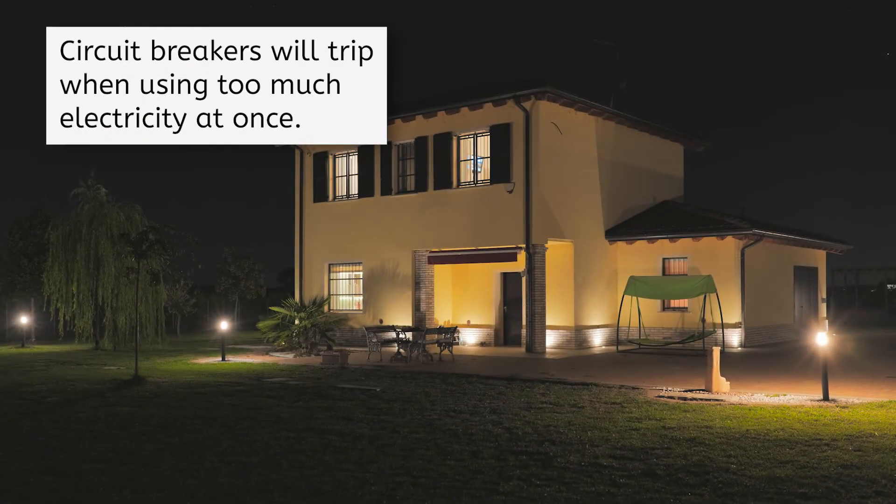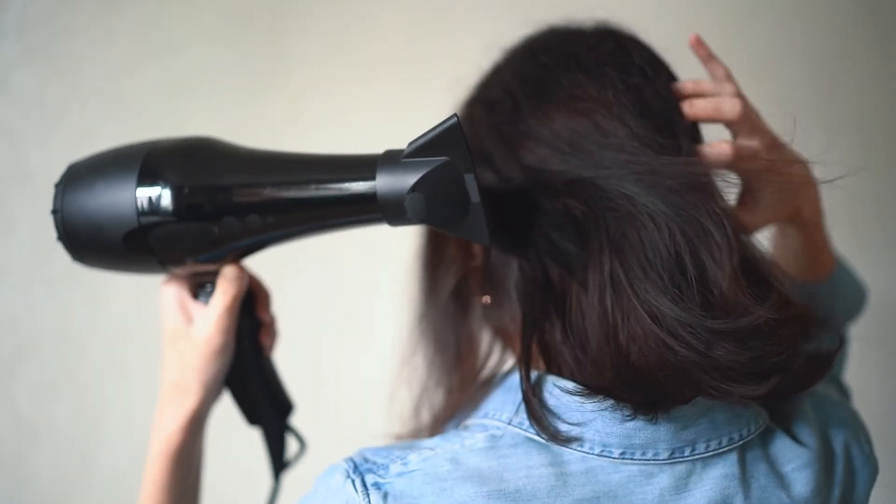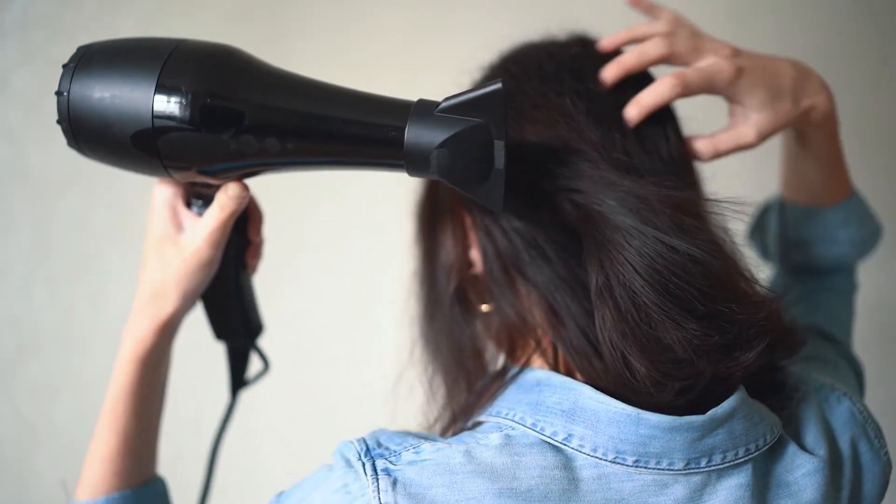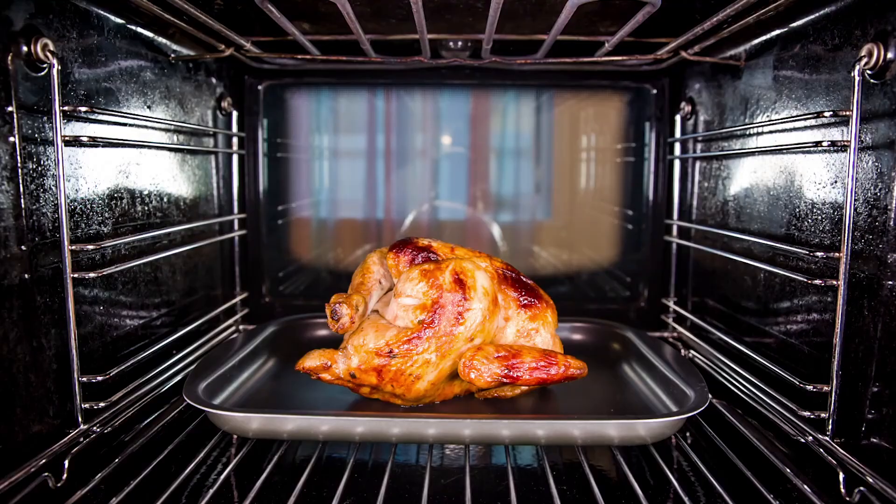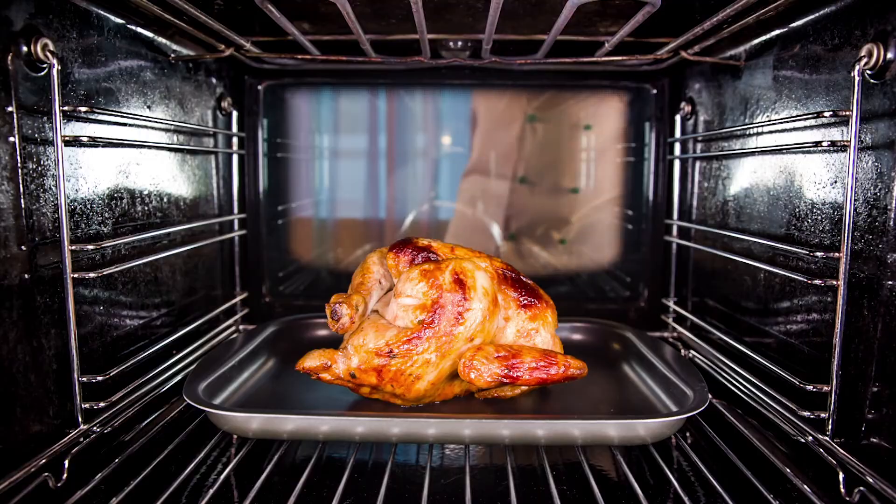Do you know what causes a tripped breaker? Circuit breakers can be tripped when your home is using too much electricity at once, and the current coming through the wires becomes too high. I guess it probably wasn't a good idea earlier to be running the hair dryer, vacuum cleaner, washing machine, oven, and air conditioner all at the same time.